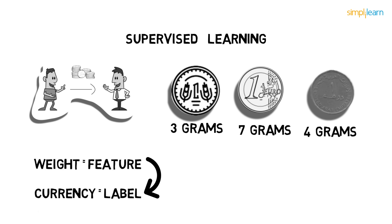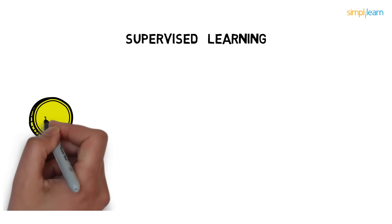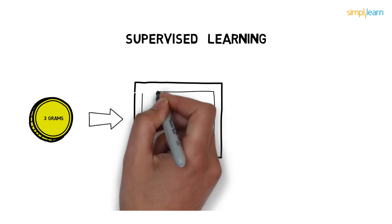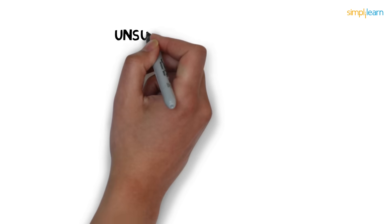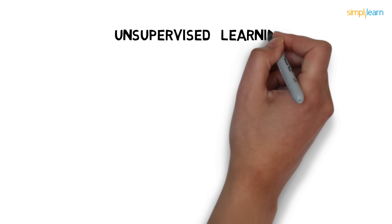When you feed this data to the machine learning model, it learns which feature is associated with which label. For example, it will learn that if a coin is of 3 grams, it will be a 1 rupee coin. Let's give a new coin to the machine. On the basis of the weight of the new coin, your model will predict the currency. Hence, supervised learning uses labeled data to train the model. Here, the machine knew the features of the object and also the labels associated with those features. On this note, let's move to unsupervised learning and see the difference.